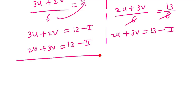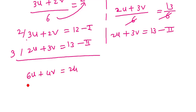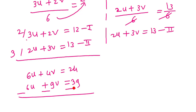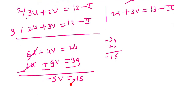To solve: multiply equation 1 by 3 to get 6u + 4v = 24, and multiply equation 2 by 2 to get 6u + 9v = 39. Subtracting: -5v = -15, so v = 3.